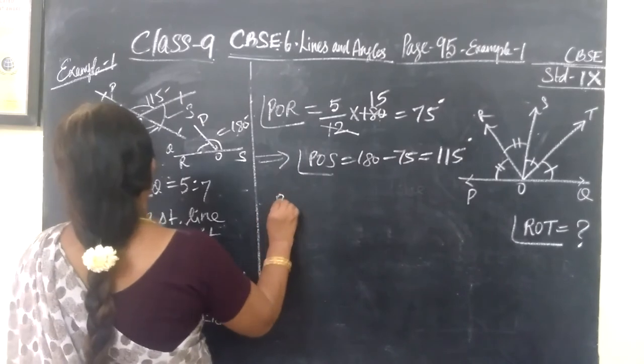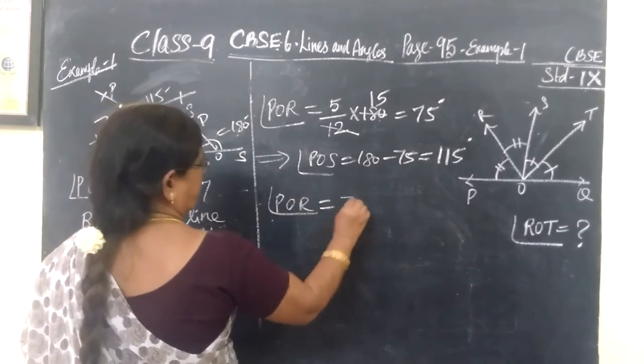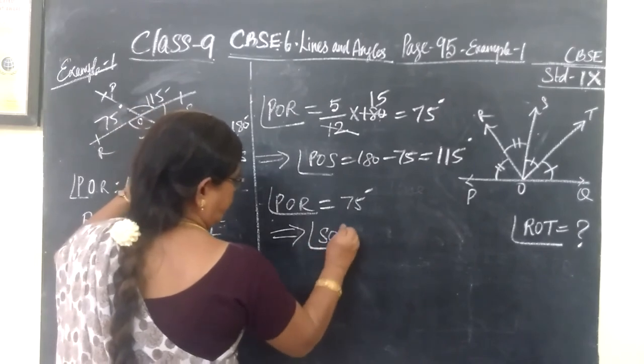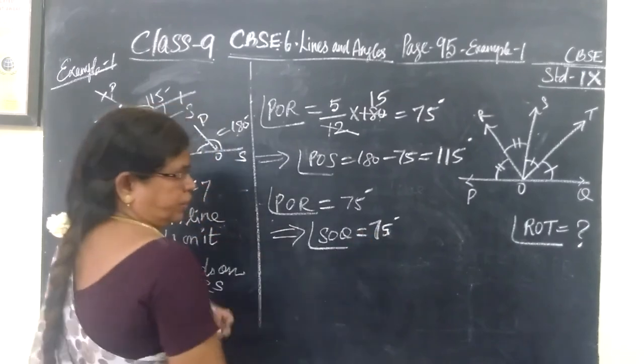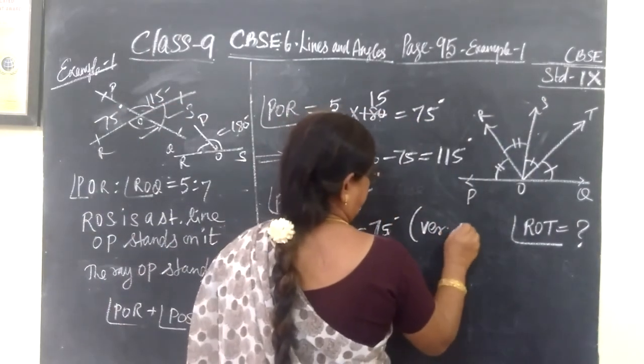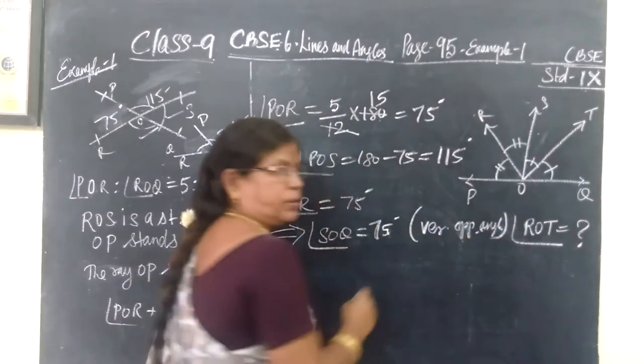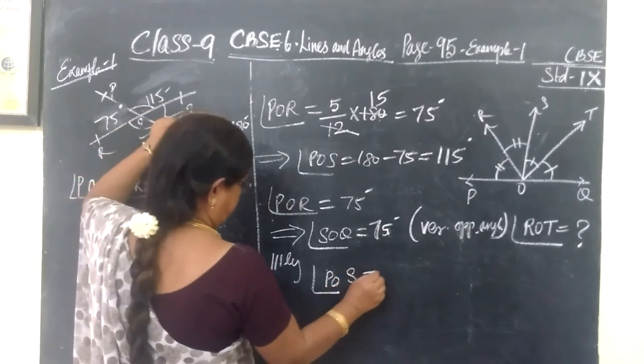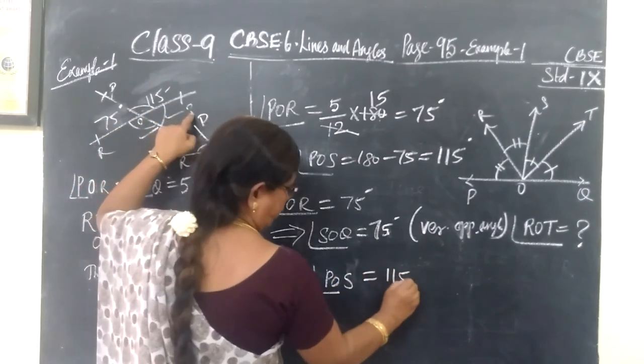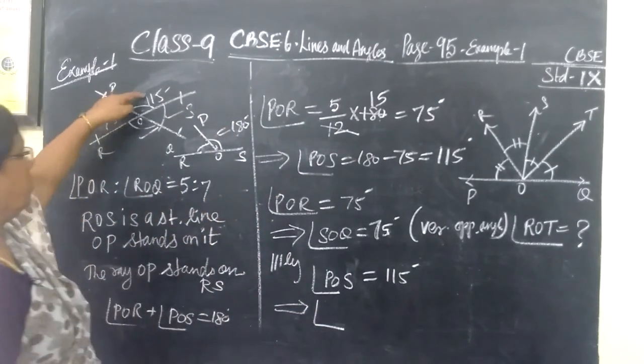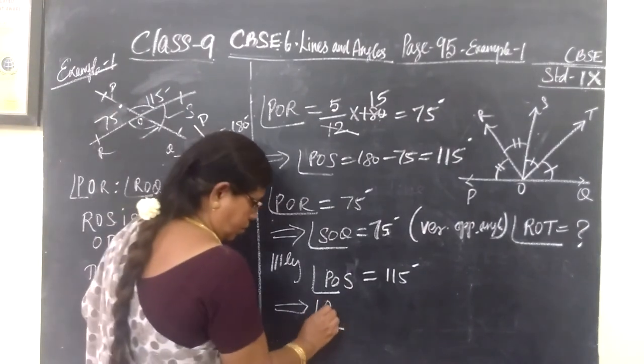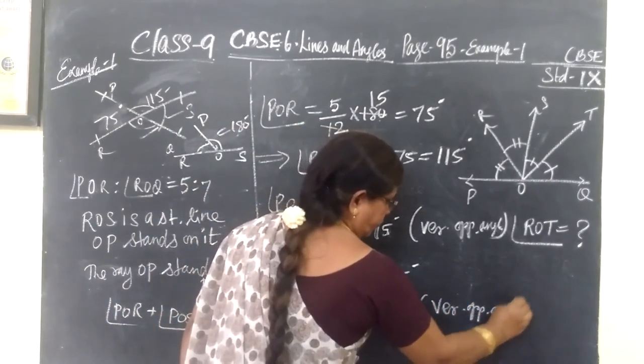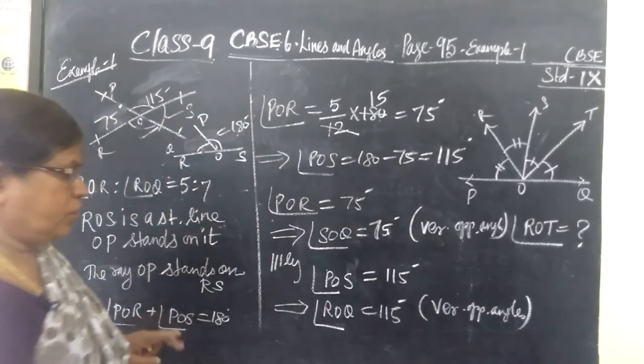So POR equals 75 implies SOQ equals that also 75, reason vertically opposite angles. So similarly, POS equals 115 degrees implies vertically opposite is ROQ. So ROQ equals 115, reason vertically opposite angles are equal.